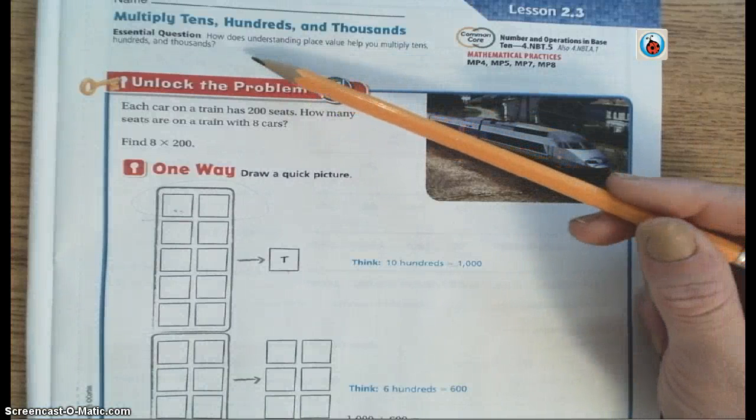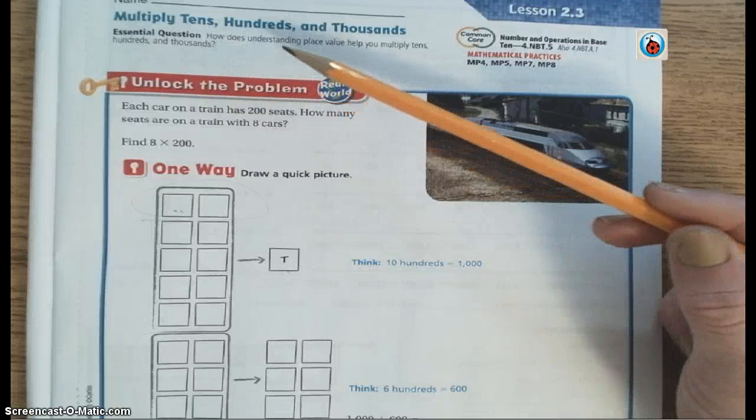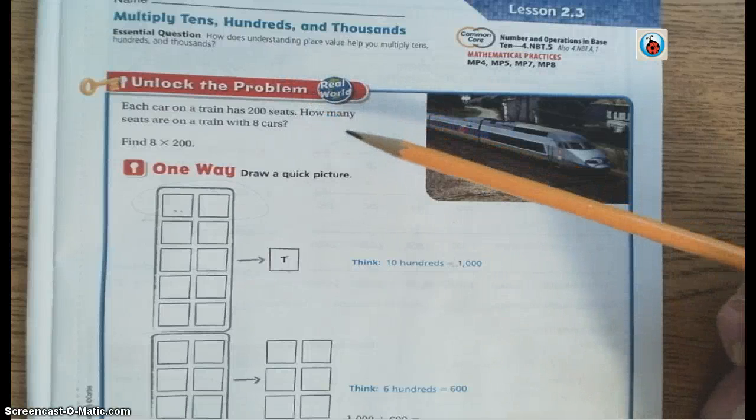We're going to turn that into an I can statement, so we're going to replace how does with I can. I can understand place value to help me multiply tens, hundreds, and thousands.